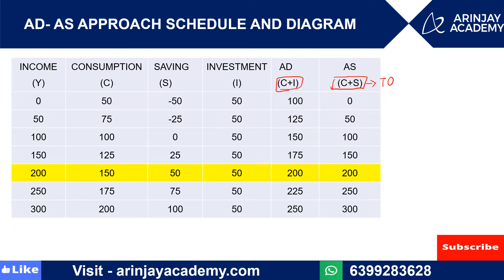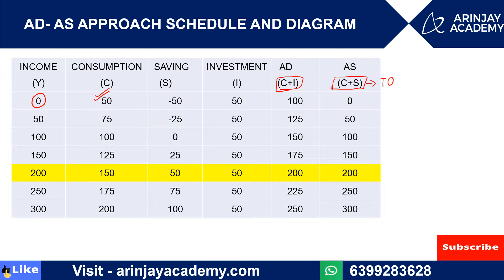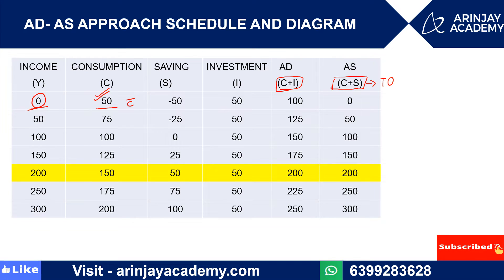At zero level of income, we have some consumption — every human being needs something for survival. Consumption done at zero level of income is known as autonomous consumption, denoted by small 'c' with a bar. As income increases, consumption also increases, showing a direct relationship between income and consumption.